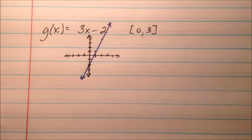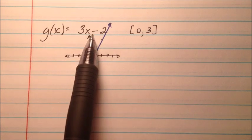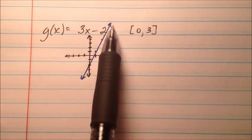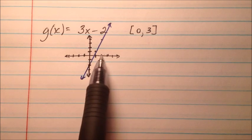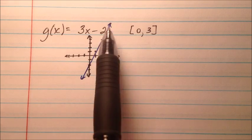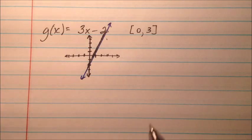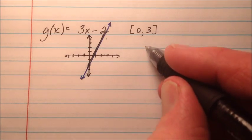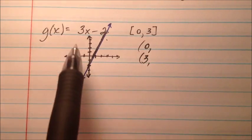In this second example, we have the function g of x equals 3x minus 2. When you graph this, it's just going to be a really nice linear function. We care about it from 0 to 3 — from 0 down here over to 3 up here. If we draw a line between those two points, well, it's actually just a line.